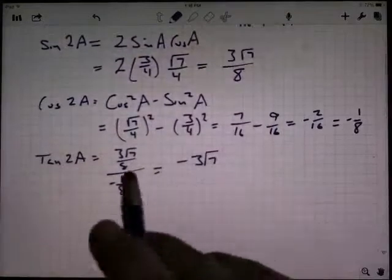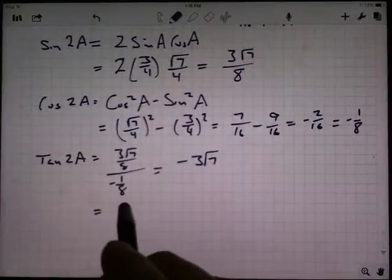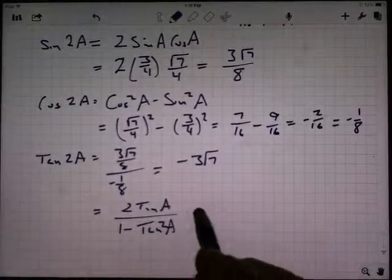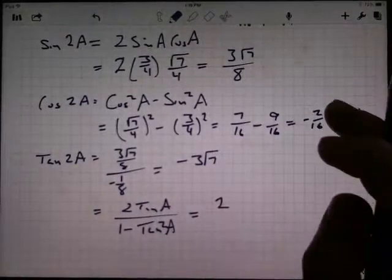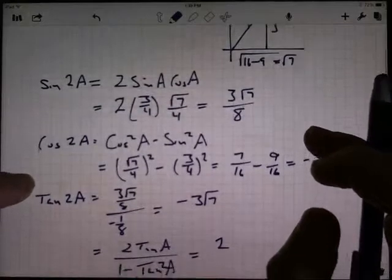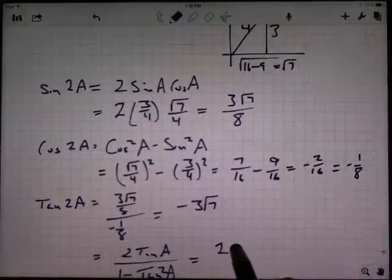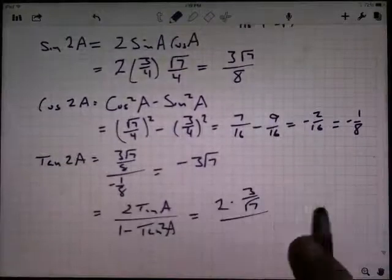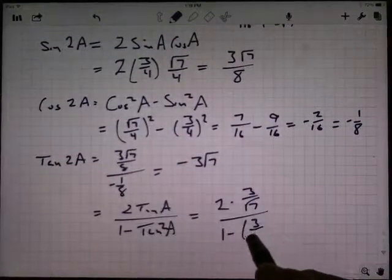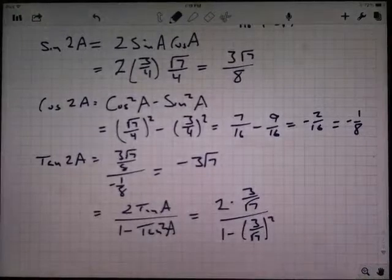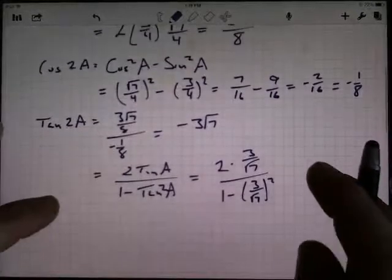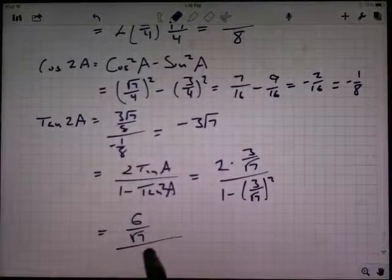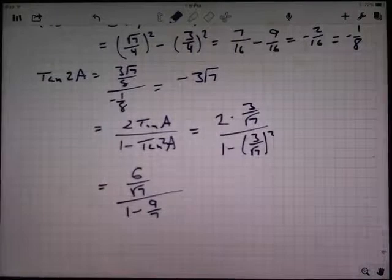If I wanted to use the identity just to show how it works here, the tangent of 2A is 2 tan A over 1 minus tangent squared A. And so, okay, I know the tangent of A. Let's try it. Tangent of A, oops, where's my picture? It just barely disappeared. Tangent of A is 3 over the square root of 7. So I've got 2 times 3 over the square root of 7. And I'm going to divide by 1 minus tangent squared, so 1 minus 3 over the square root of 7 squared. And how does this come out? I've got 6 over radical 7 on the top. I've got 1 minus 9 over 7 on the bottom.